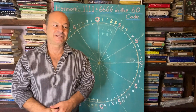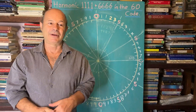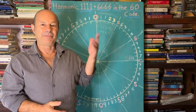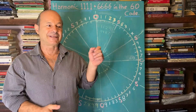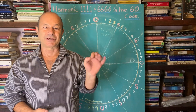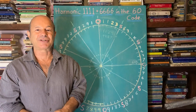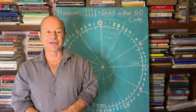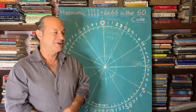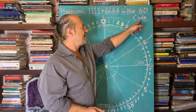Inside the Fibonacci sequence, there is a 24 code, a 24 repeating pattern. But there's another important code that was discovered by a French mathematician 200 years ago, and it was called the 60 code.